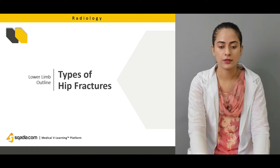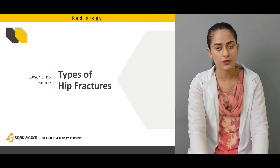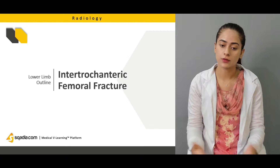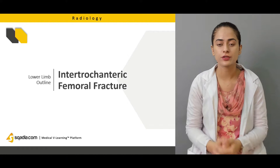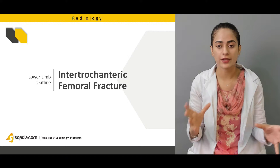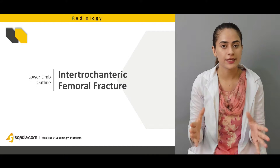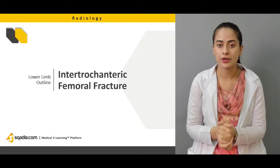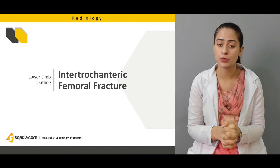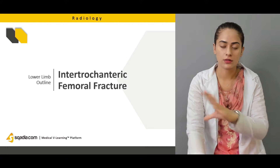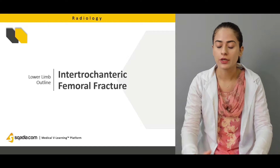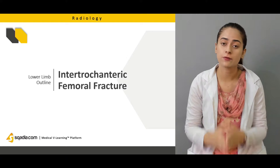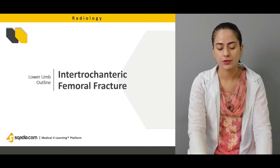We're going to discuss how different fractures appear on radiographs and how we can differentiate them. We'll talk about femoral fractures — specifically the intertrochanteric fracture, which is a fracture between the two trochanters, the greater and the lesser. We'll identify which part is the greater trochanter and which is the lesser trochanter of the femur, and then discuss how to diagnose an intertrochanteric femur fracture.